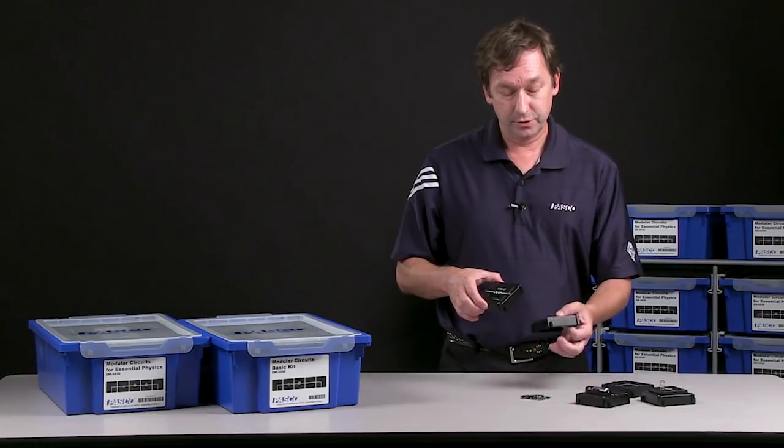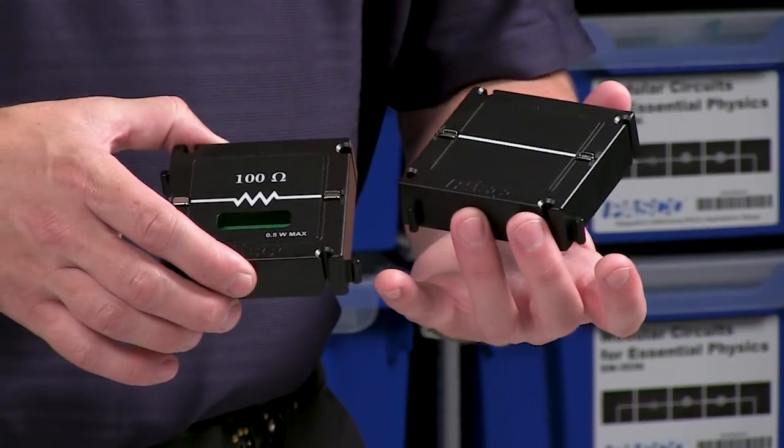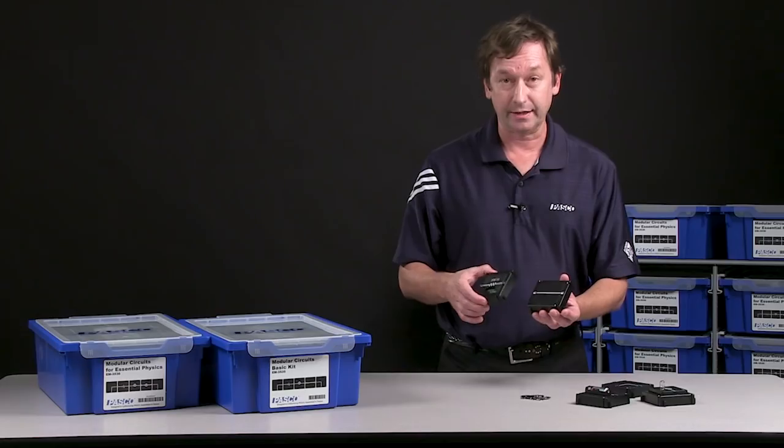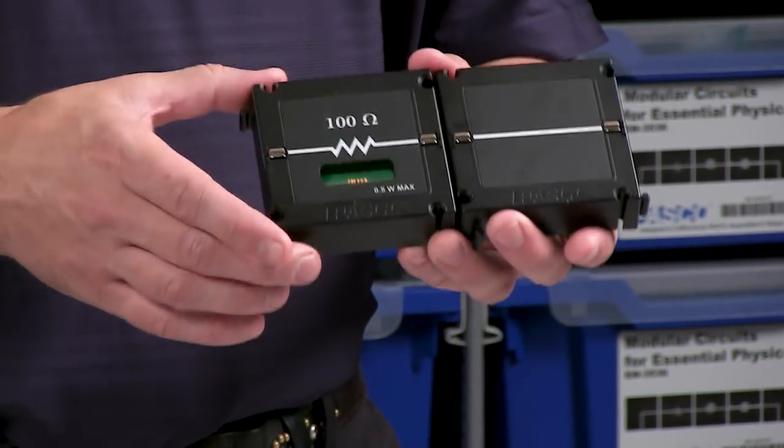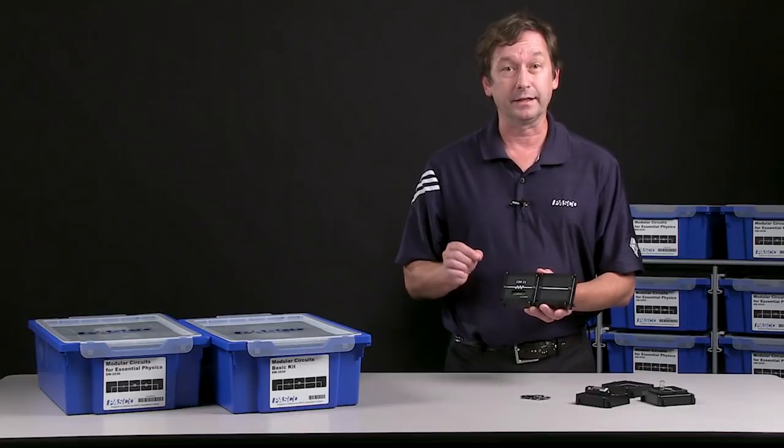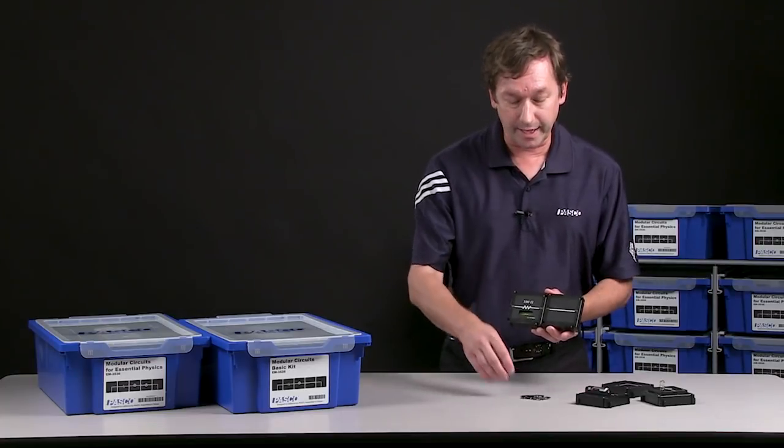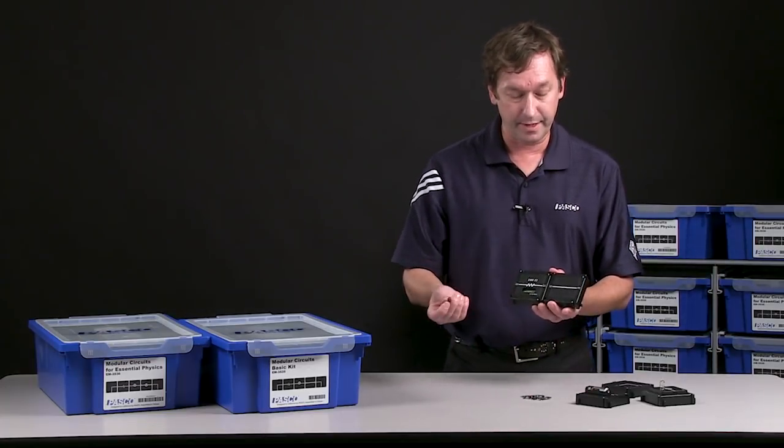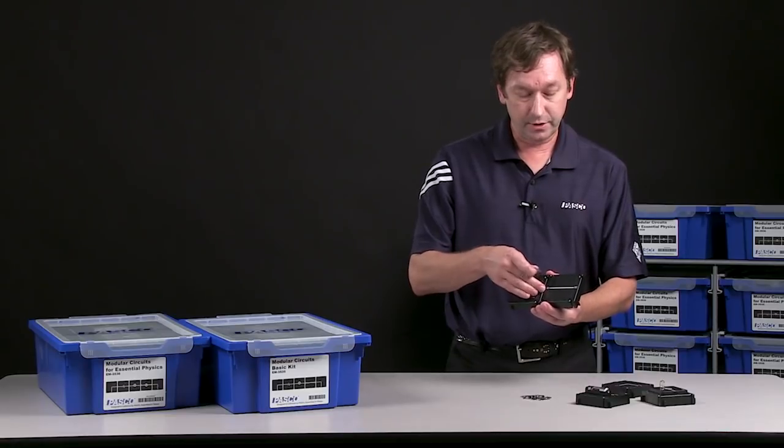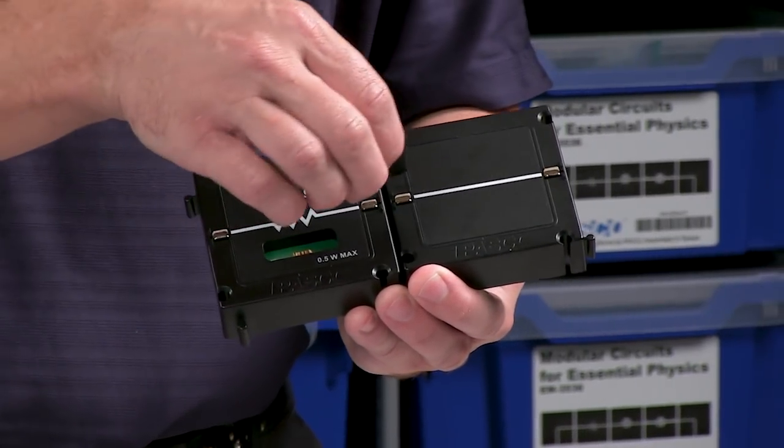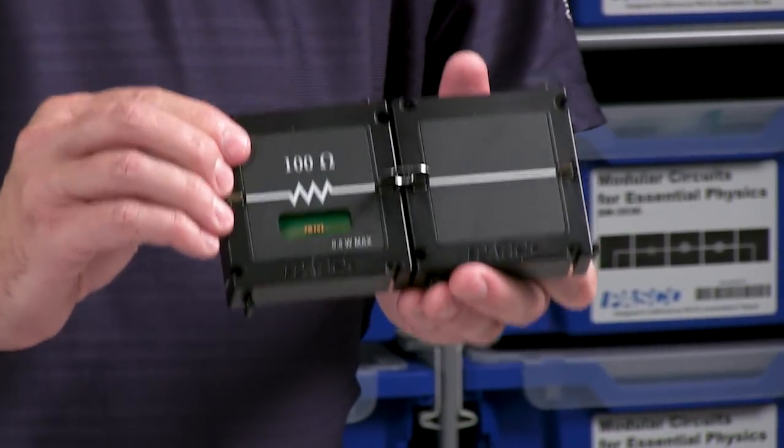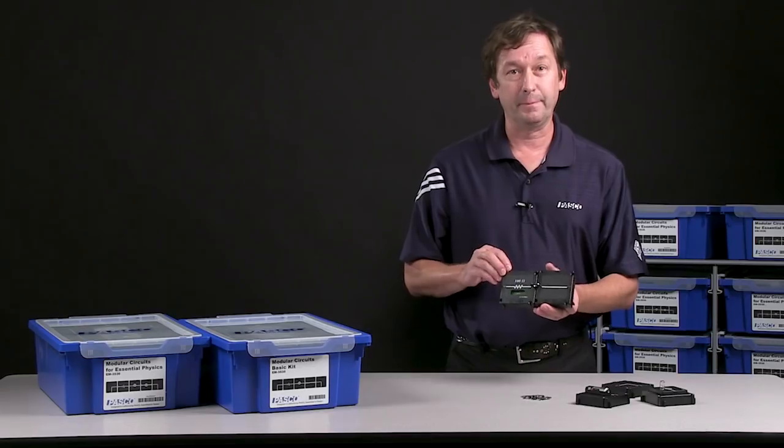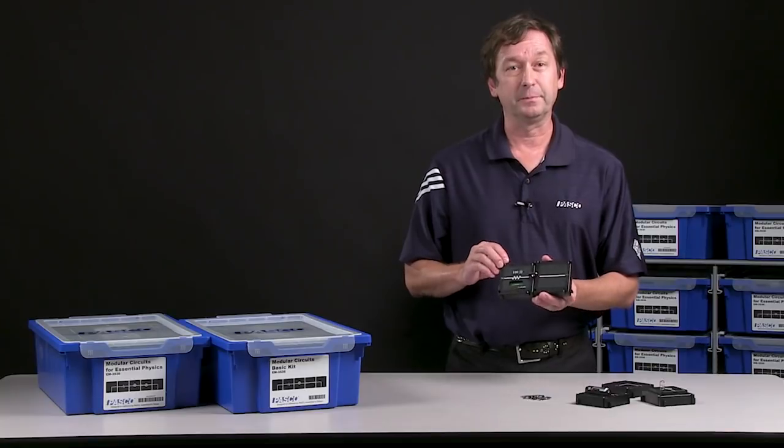Now if I take two modules, you'll notice there are these tabs around the edges, and that allows us to take modules and connect them together, but this is only a physical connection. We still want the student to make an electrical connection. So we have these tabs that are made of metal, and the student will take two modules that are adjacent to each other, connect the metal tab, and now they're connected electrically. So let's take a bunch of modules and make a complete circuit.